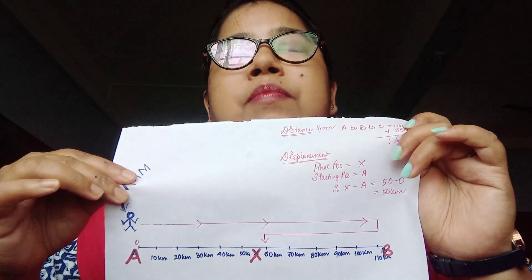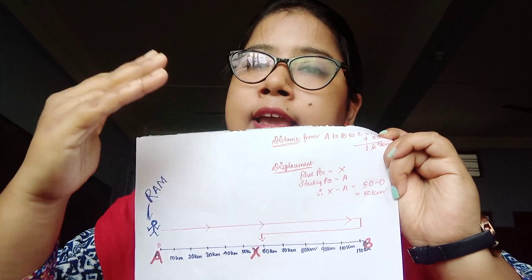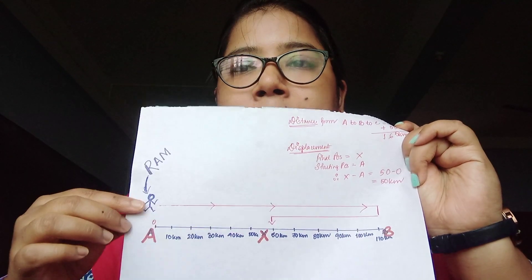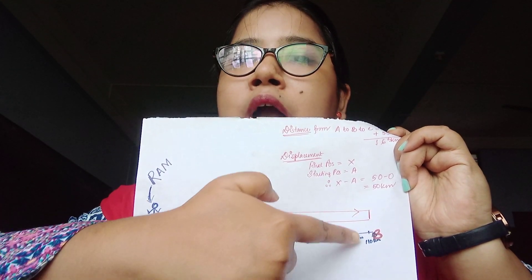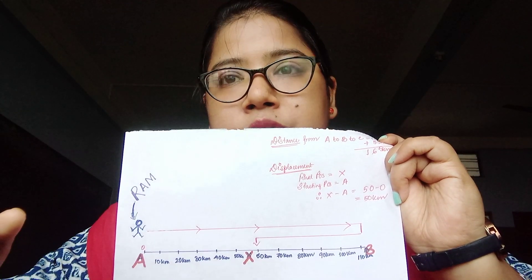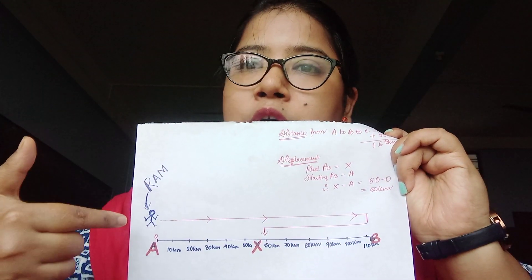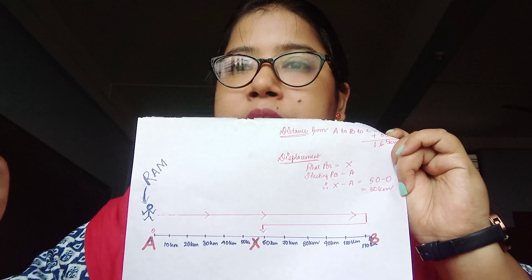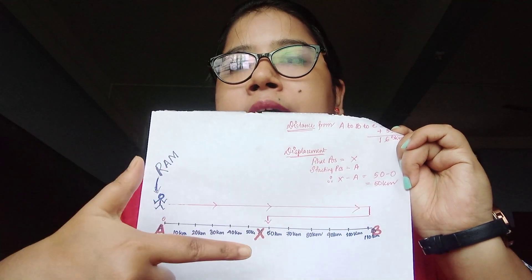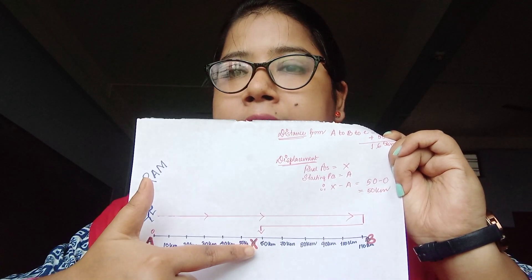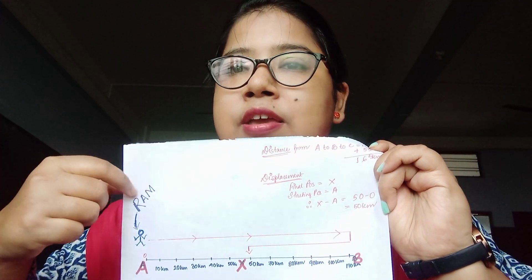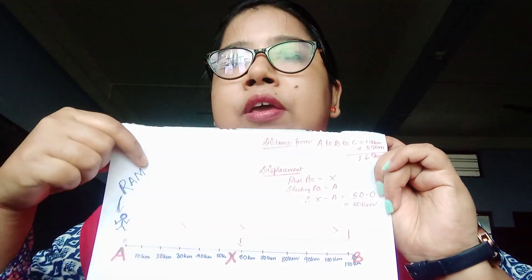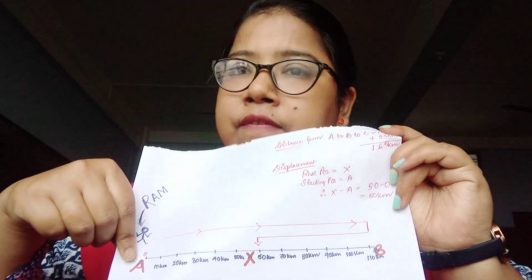Now, what is displacement? Displacement is always the difference between the final position and the initial position. Ram started from A — that is the initial position. The final position is X. So displacement only needs two things: the initial position and the final position. Initial position is A, final position is X. The difference is 50 kilometers. So Ram's distance covered is 165 km and displacement is 50 km.